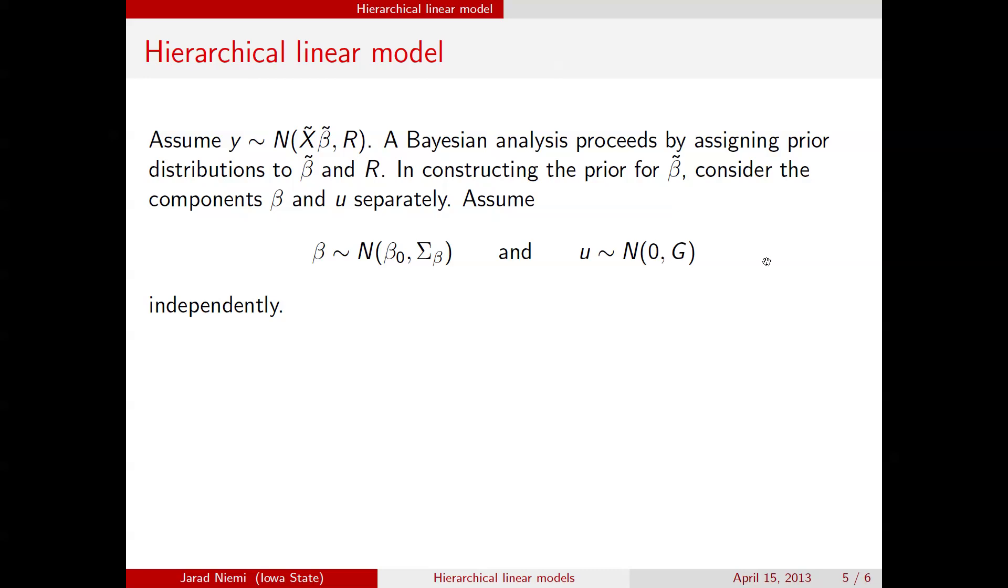So at this point, and we're going to typically assume that these are independent, at this point, it seems, from a Bayesian perspective, that maybe there's no difference between these fixed effect betas and these random effects U. We just assign a prior to both of them, with the only exception being here we plugged in a 0 for the random effects, and we haven't done that for the fixed effects, even though, typically, we would put a 0 in here for the fixed effects.